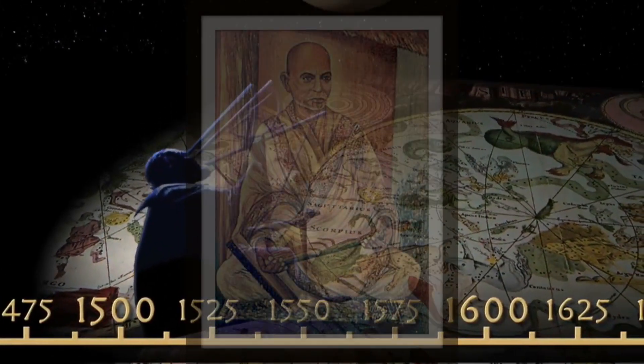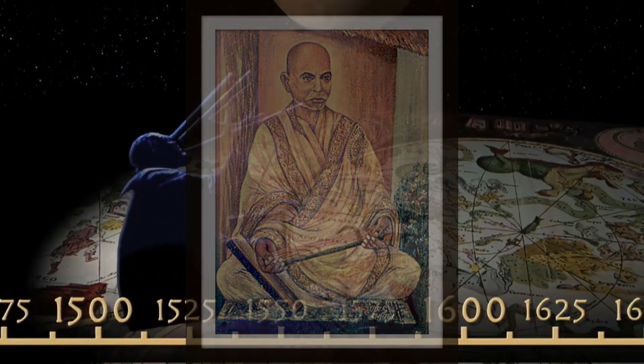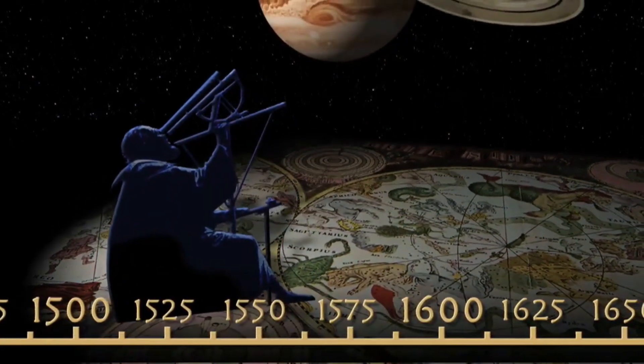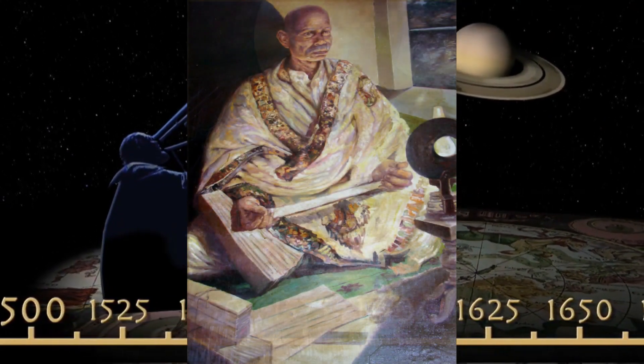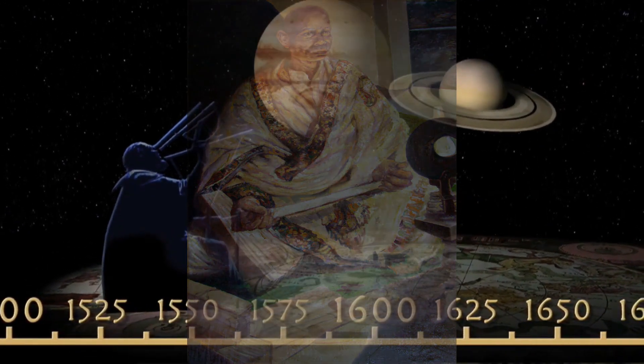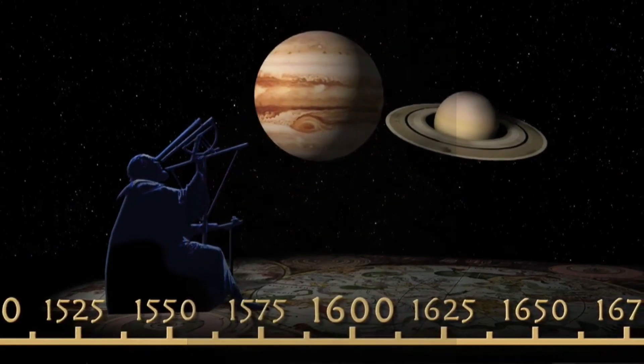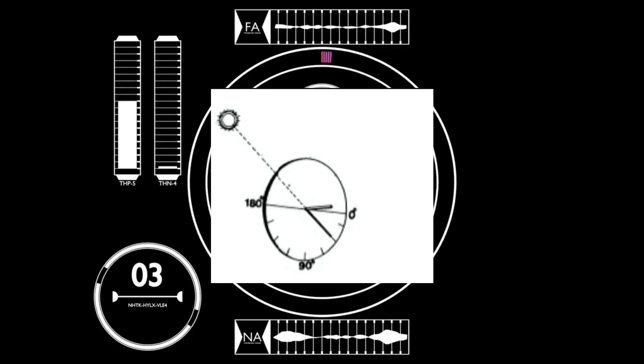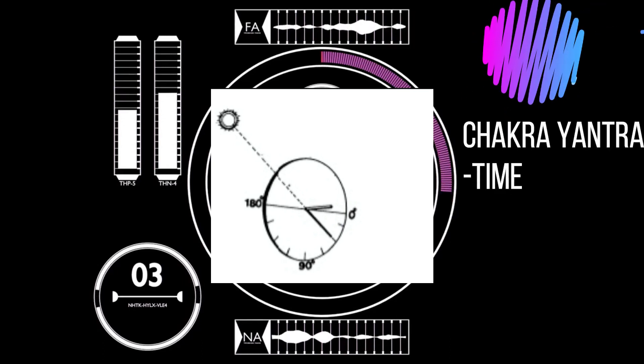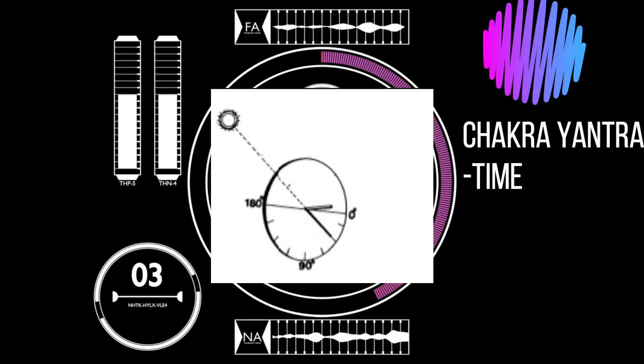One more thing that glorifies Pathani Samanta is that he had no access to modern instruments. It was because of this he created 10 new instruments of his own. Some of them are Chakra Yantra used to measure time.